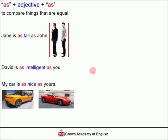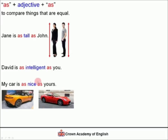My car is as nice as yours. So this is my car and this is your car. My car is nice, and your car is also nice, so we can say my car is as nice as yours. We are comparing two things — or two people — that are equal.